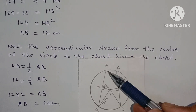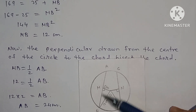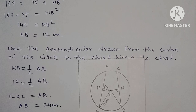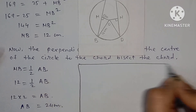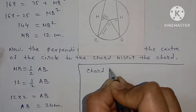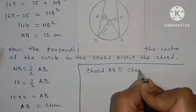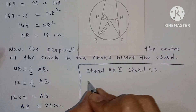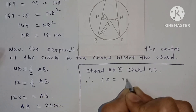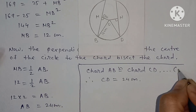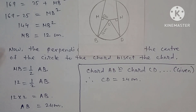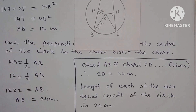So the first chord AB = 24 centimeters. Both chords in the question are congruent — AB and CD are congruent — therefore chord CD is also 24 centimeters. Therefore the length of each of the two equal chords of the circle is 24 centimeters.